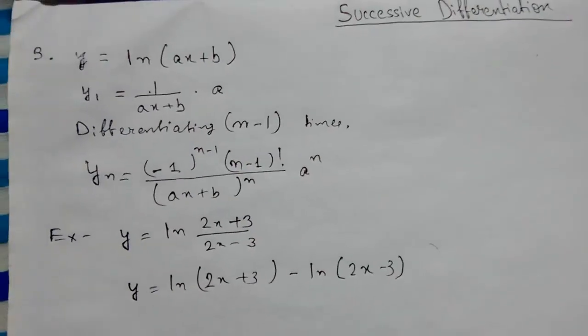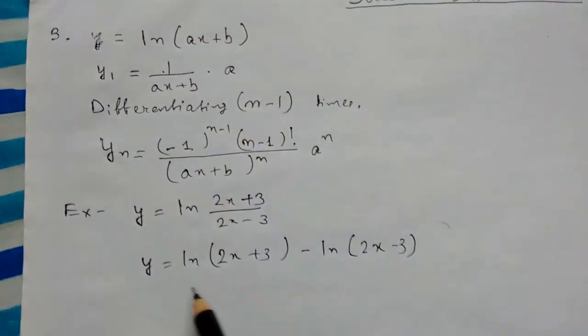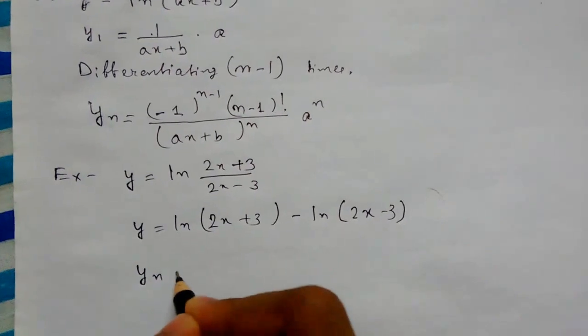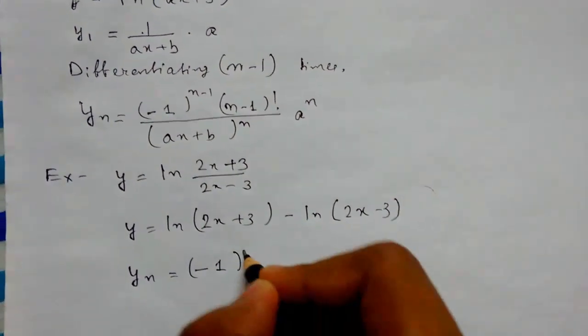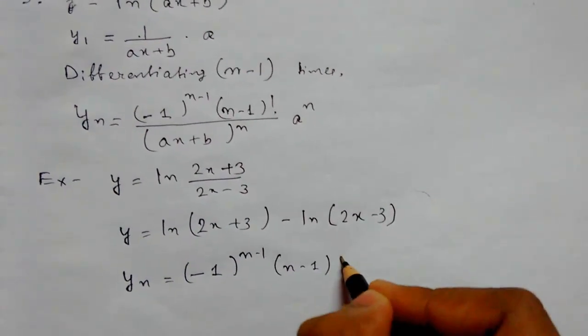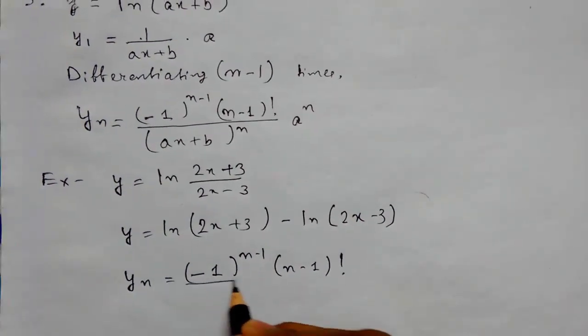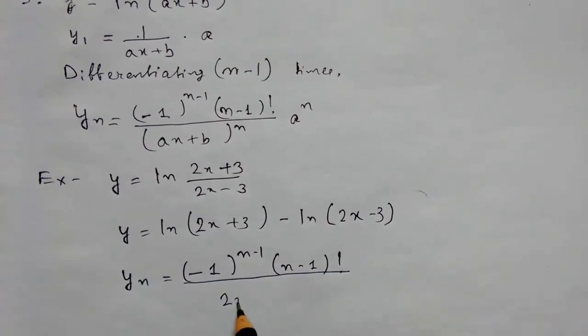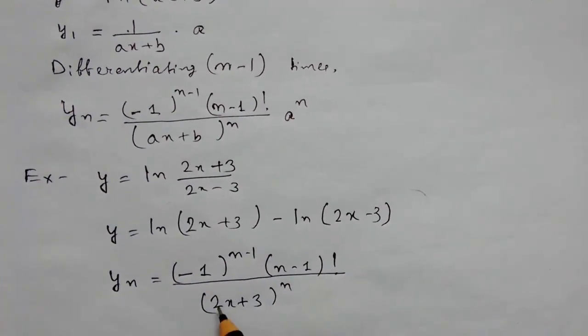You can directly use this formula and write the nth derivative. yn equals (-1)^(n-1) times (n-1)! over (2x + 3)^n, with a equals 2, so 2^(n-1).